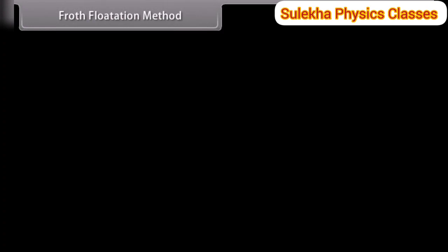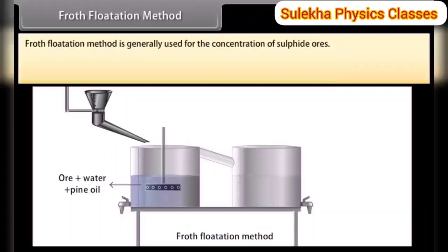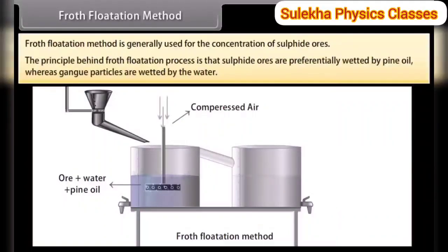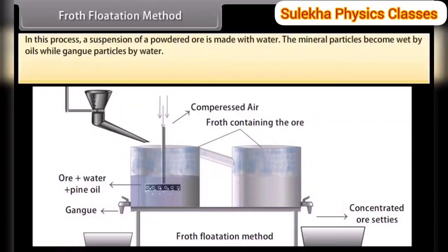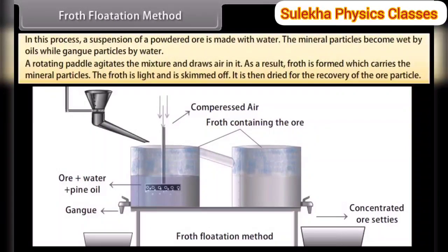Froth flotation method. This method is generally used for the concentration of sulphide ores. The principle is that sulphide ores are preferentially wetted by pine oil, whereas gangue particles are wetted by water. A suspension of powdered ore is made with water; collectors like pine oil, fatty acids and xanthates are added. Froth stabilizers like cresols and aniline stabilize the froth. Mineral particles become wet by oils while gangue particles are wetted by water. A rotating paddle agitates the mixture and draws air in. As a result, froth is formed which carries the mineral particles. The froth is skimmed off and dried for recovery of the ore particles.